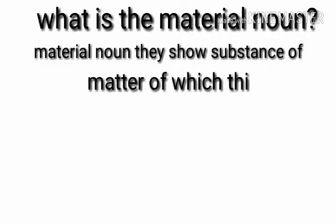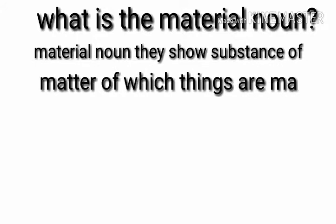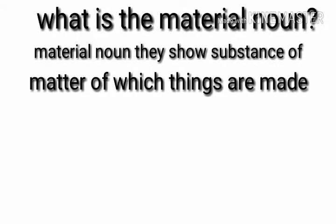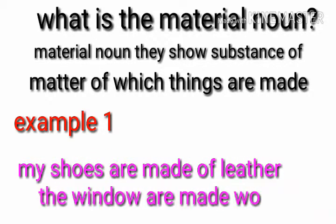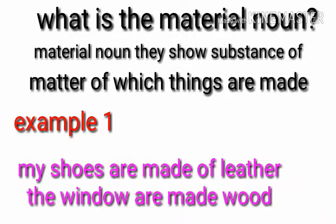What is a material noun? A material noun shows the substance or matter of which things are made. Example 1: My shoes are made of leather. The windows are made of wood.